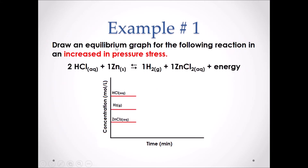Example number one. Draw an equilibrium graph for the following reaction when there is an increase in pressure stress. If there is an increase in pressure, then there must be a decrease in volume, which would shift to the side with less gas moles. Our reactants have zero gas moles, and our products have one gas mole. Therefore, this reaction would shift left towards the reactants.